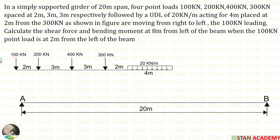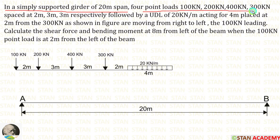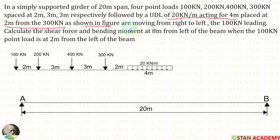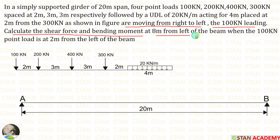Hello everyone. Today we are going to see a problem based on influence line diagrams. Let us read the question: In a simply supported girder of 20 meter span, 4 point loads — 100 kN, 200 kN, 400 kN, 300 kN — spaced at 2 m, 3 m, and 3 m respectively, followed by a UDL of 20 kN per meter acting for 4 m, moving from right to left with the 100 kN leading. Calculate the shear force and bending moment at 8 m from the left of the beam.